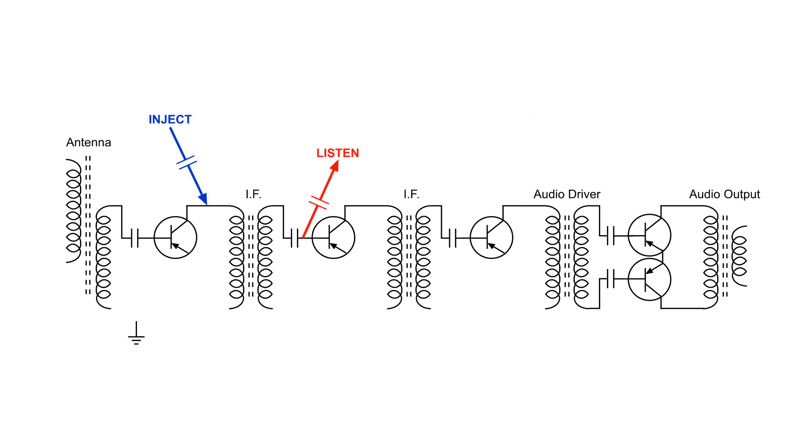Here's another possibility. Say I'm injecting the signal at the collector of the first transistor, and I'm listening at the base of the second transistor, and I'm hearing my signal just fine. But I move the tracer to the collector of the second transistor, and I don't hear anything. Well, that could mean that the transistor is bad, the second one, if it has power. If it has power, that transistor is bad. If it doesn't have power, that means that the second IF primary may be open.